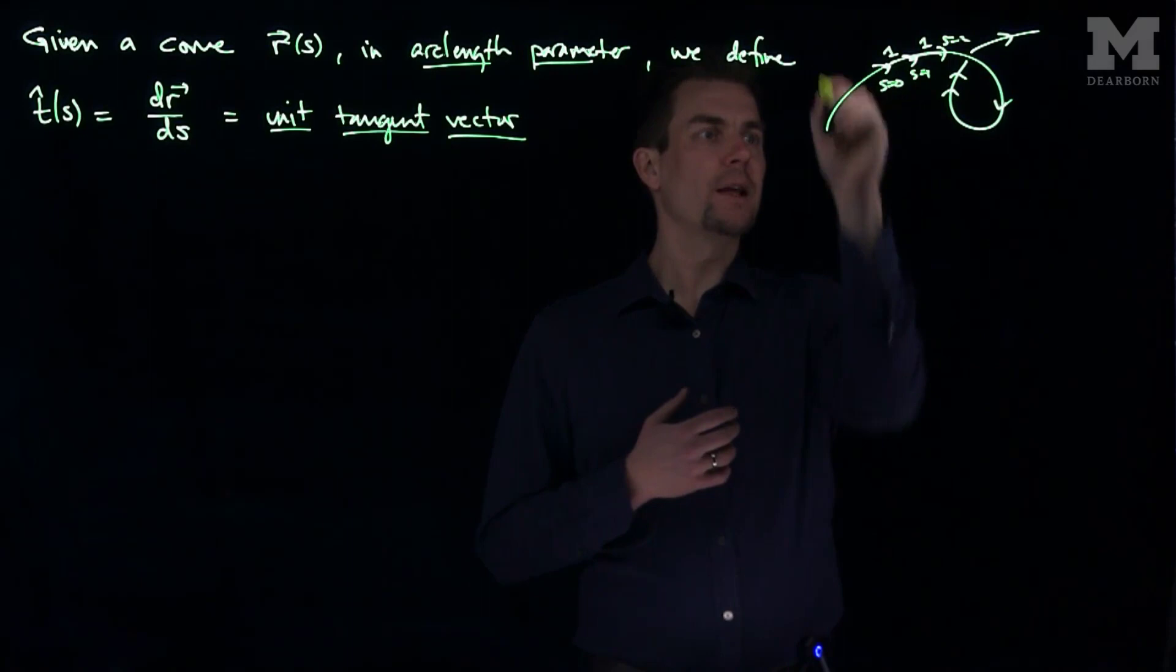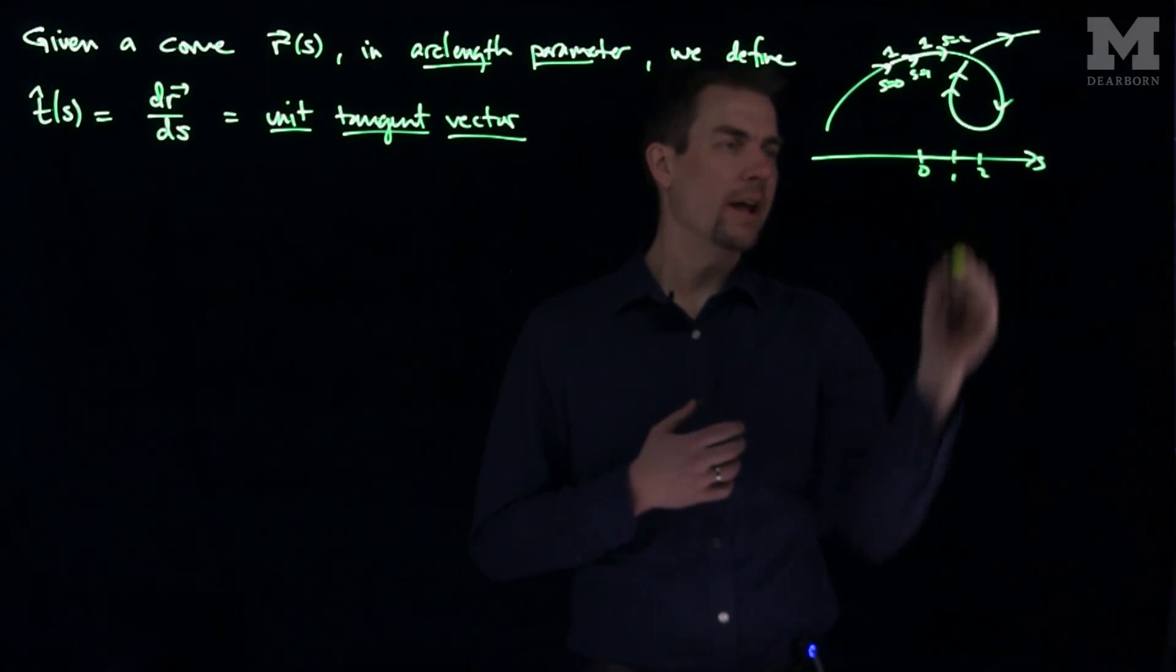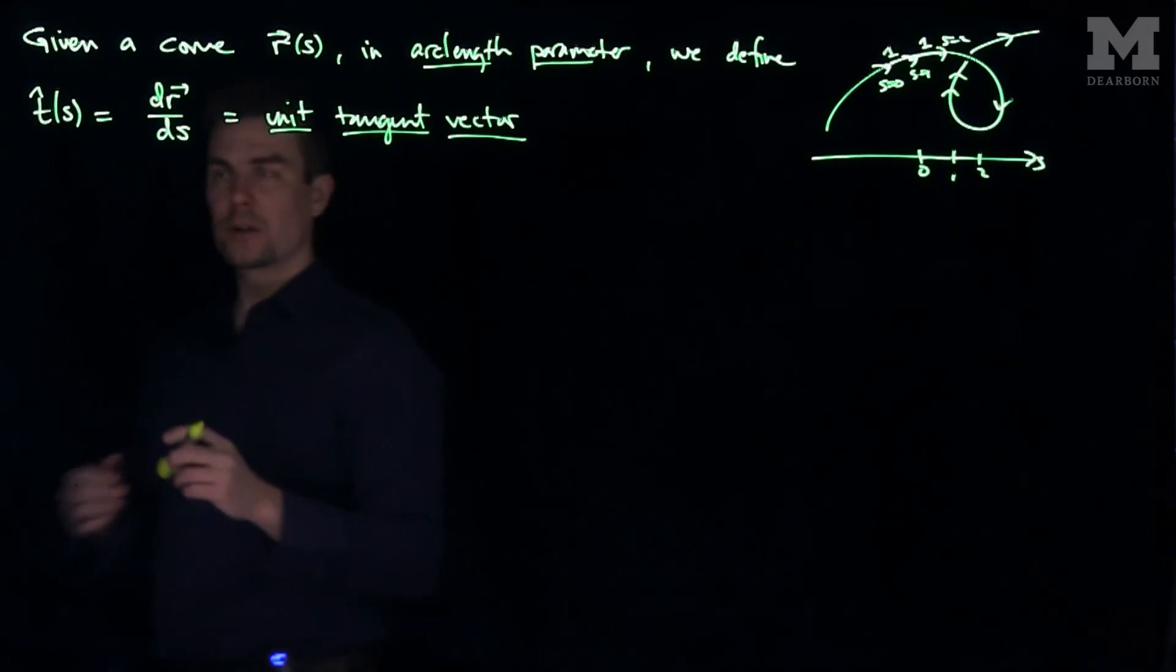If I go from 1 to 2, that will also have a length of 1. So what we're doing is we're taking the s-axis, 0, 1, 2, of unit lengths, and we're mapping them onto the curve in such a way that the unit lengths are preserved. So that's our unit tangent vector.